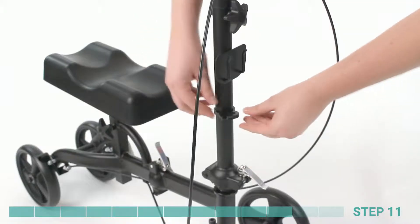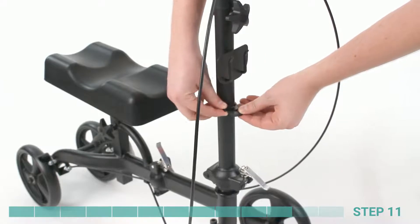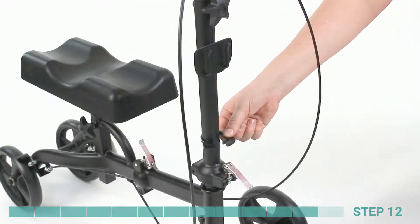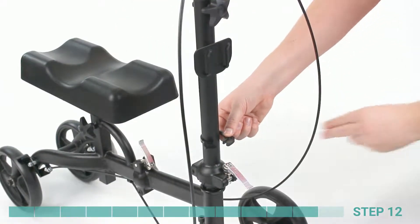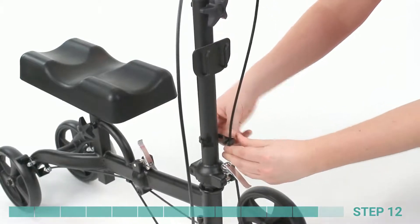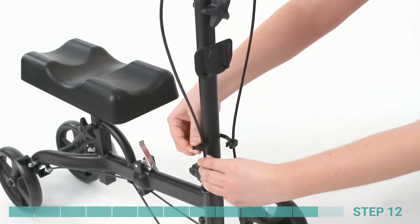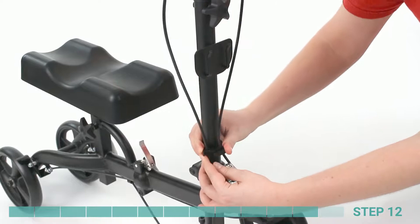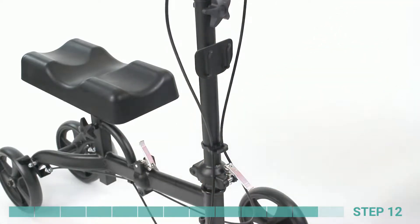Step 11. Locate the brake cable fastener and fit around the steering column. Step 12. Insert each brake cable into the slots in the brake cable fastener. Squeeze the ends of the brake fastener together until the plastic teeth secure into place.